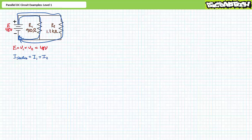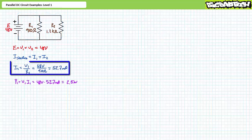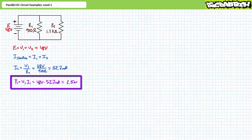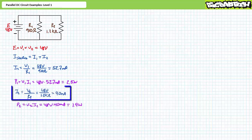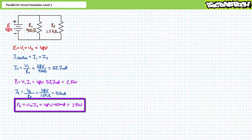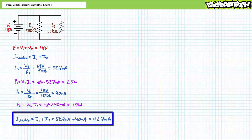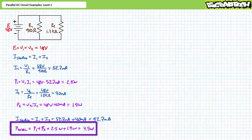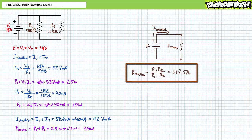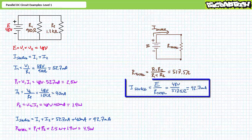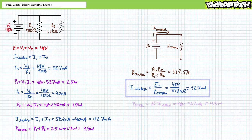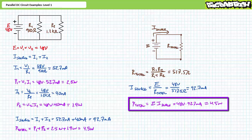There are several ways to obtain the desired figures; perhaps the easiest is through simple use of Ohm's law. I1 equals V1 over R1, yielding 52.7 milliamps. P1 equals V1 times I1, yielding 2.5 watts. Similarly, I2 equals V2 over R2, yielding 40 milliamps, and P2 equals V2 times I2, yielding 1.9 watts. Source current equals I1 plus I2, yielding 92.7 milliamps. Total power equals P1 plus P2, yielding 4.5 watts. As a check, the parallel combination of 910 and 1.2-kilohm resistors yields a total resistance of 517.5 ohms, confirming 92.7 milliamps and 4.5 watts.